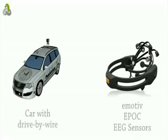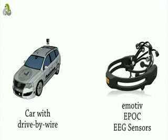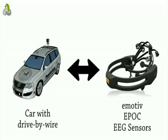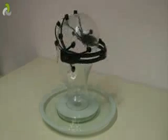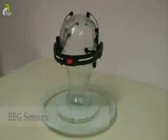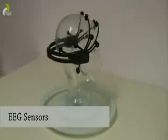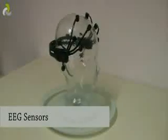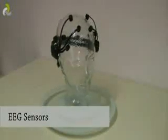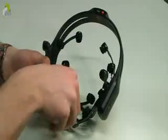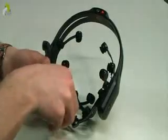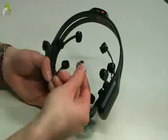On the left is our car. On the right you can see the EEG sensors used for measuring brain activity. The human brain produces electromagnetic signals, which can be measured using a special cap with 16 sensors.